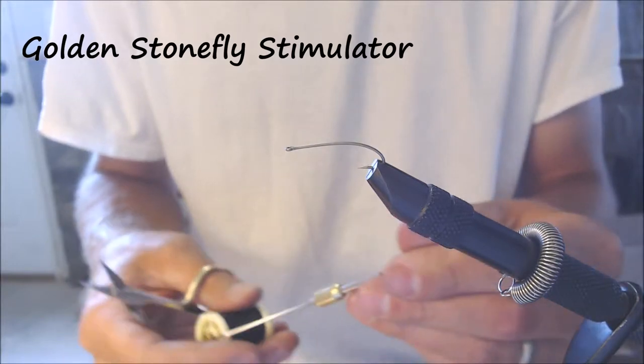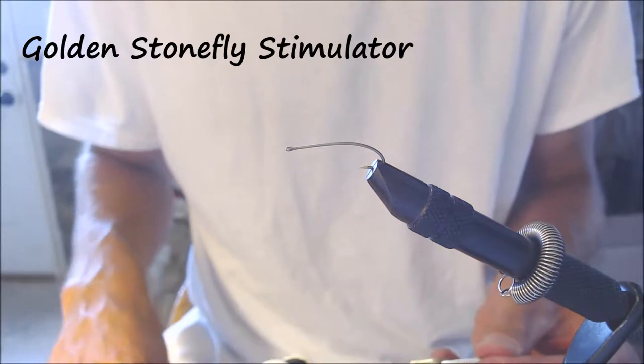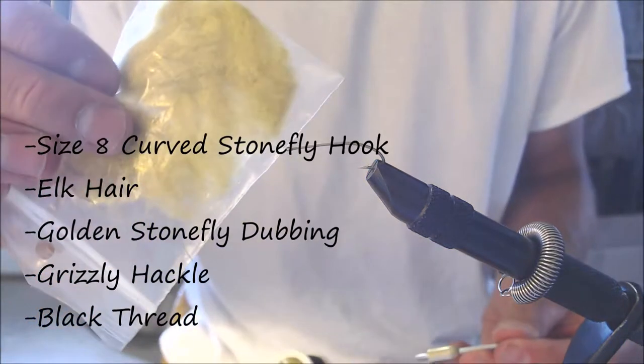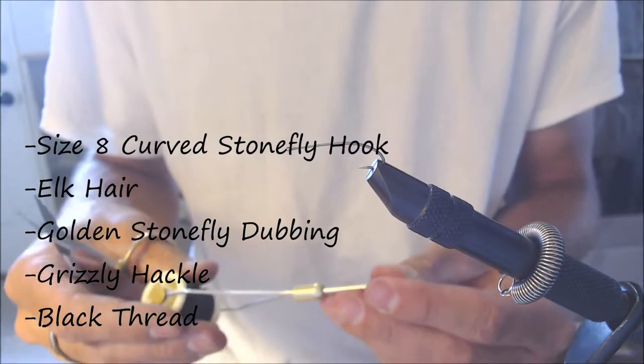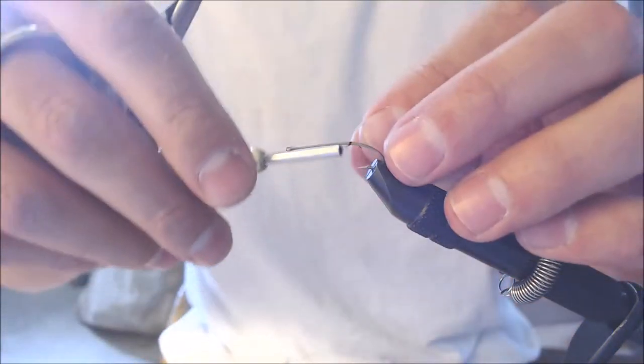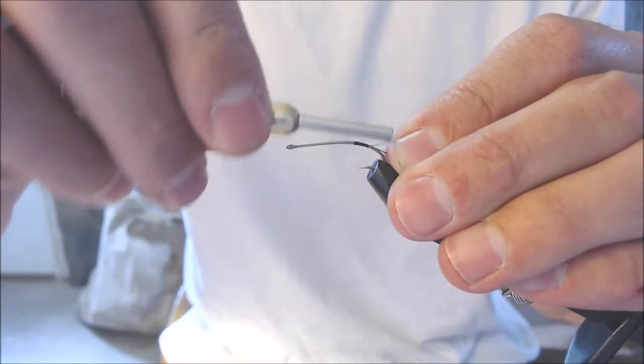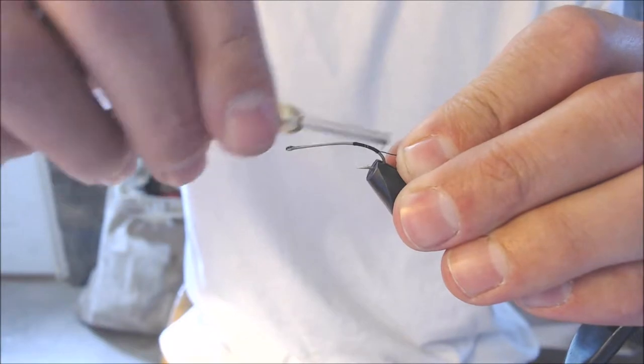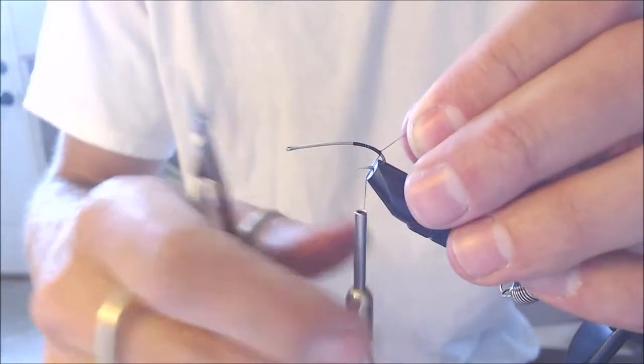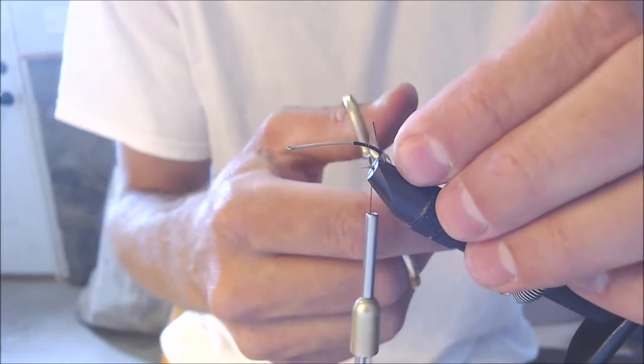For this fly we're going to tie a golden stimulator. This is just a stimulator pattern where the body of the fly is actually a golden stone fly dubbing. A stimulator is a very popular pattern and a lot of people like to fish with it for a number of reasons. It floats well, it's relatively easy to tie, and they're in abundance because you can find them at most places where you would be able to buy flies.